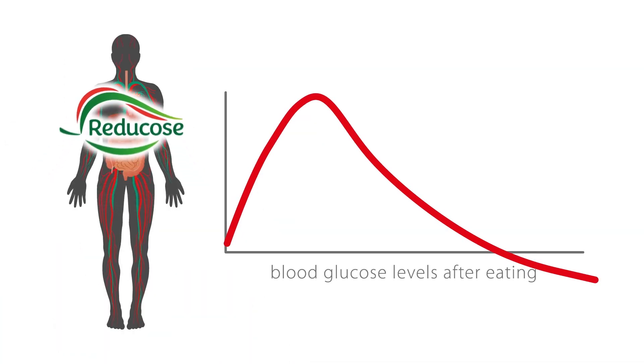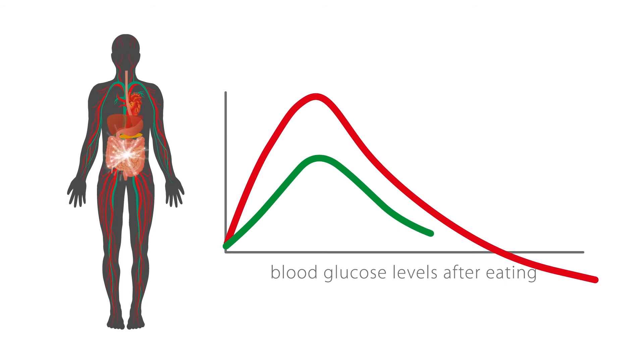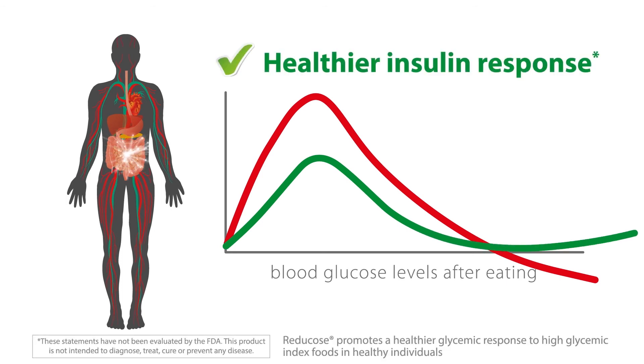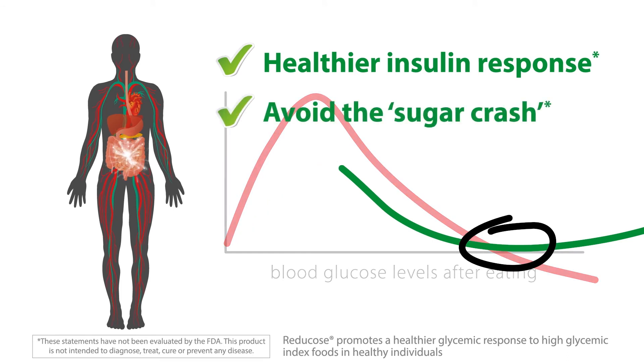Taking Reducose at the start of a meal results in a much lower and slower spike in blood glucose and insulin after eating. A lower and slower blood glucose spike leads to a healthier insulin response, helping to avoid the sugar crash.